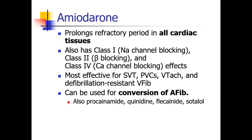All cardiac tissues will have a longer refractory period in patients taking amiodarone. It's a complicated medication that actually has some class I, class II, and even class IV effects. As a result, amiodarone is effective for a wide variety of arrhythmias, including supraventricular tachycardias, PVCs, V-tach, and even defibrillation-resistant V-fib. Notably, amiodarone can also be used for conversion of atrial fibrillation — it may give both rate control and rhythm control, converting the patient from atrial fibrillation into sinus rhythm.